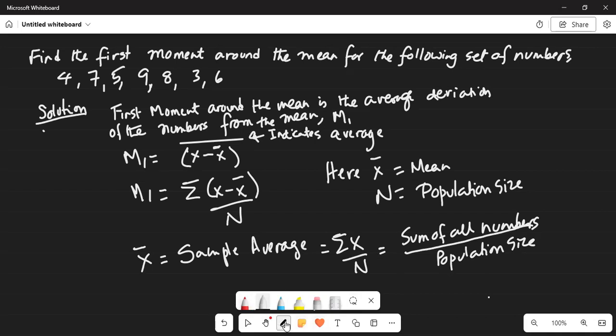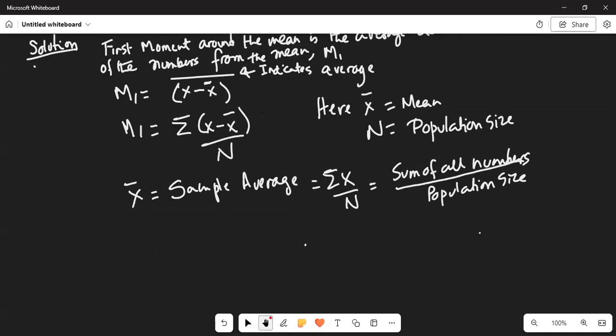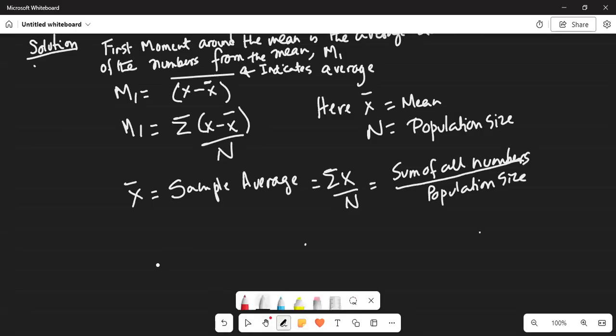Divided by population size. So if I move this a little bit, create some space. So x-bar is equal to 4 plus 7 plus 5 plus 9 plus 8 plus 3 plus 6, divided by 7, which equals 42 divided by 7.